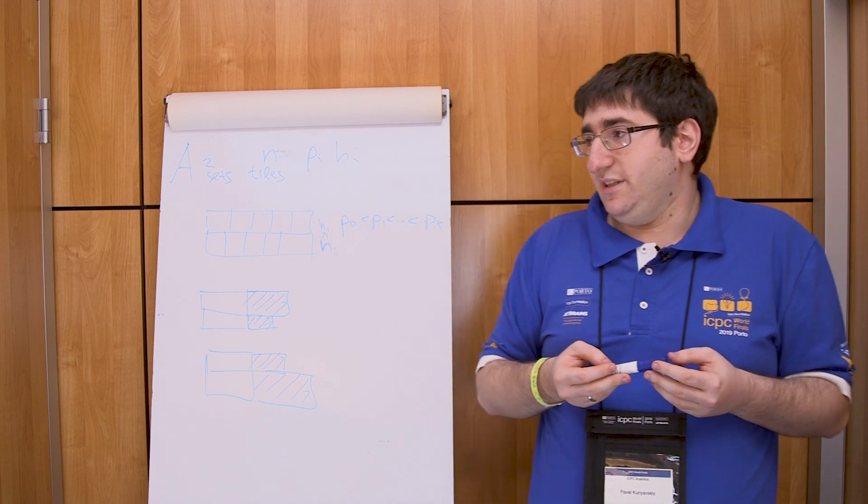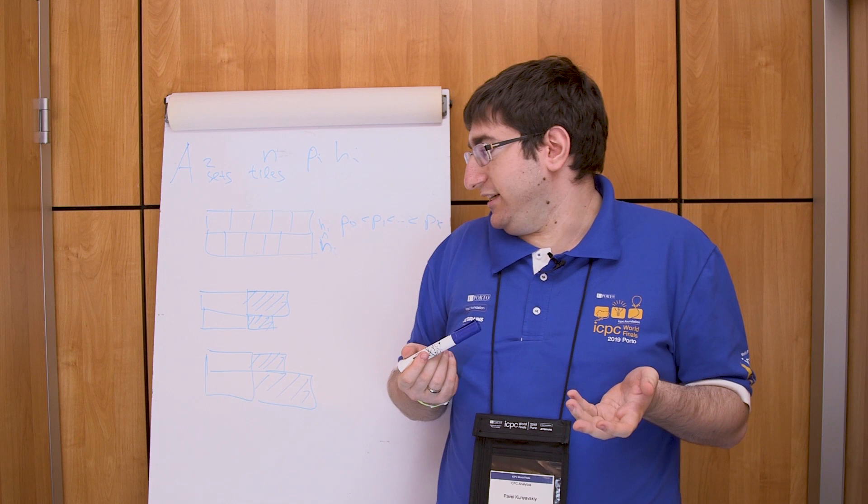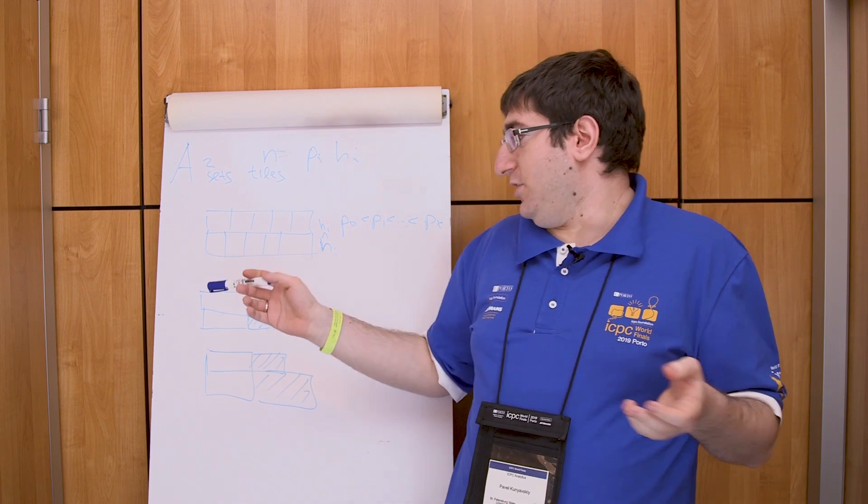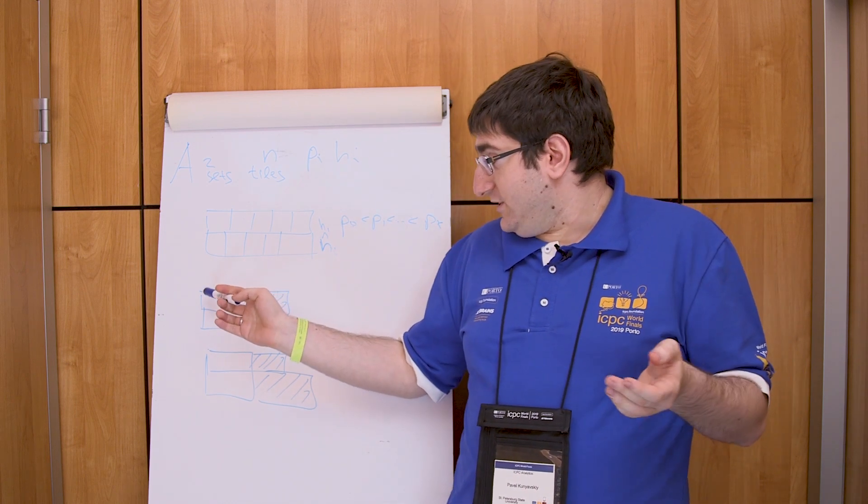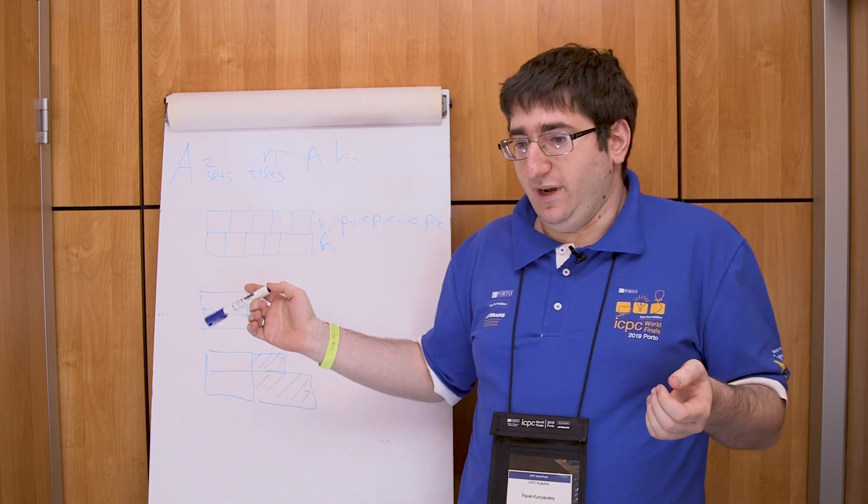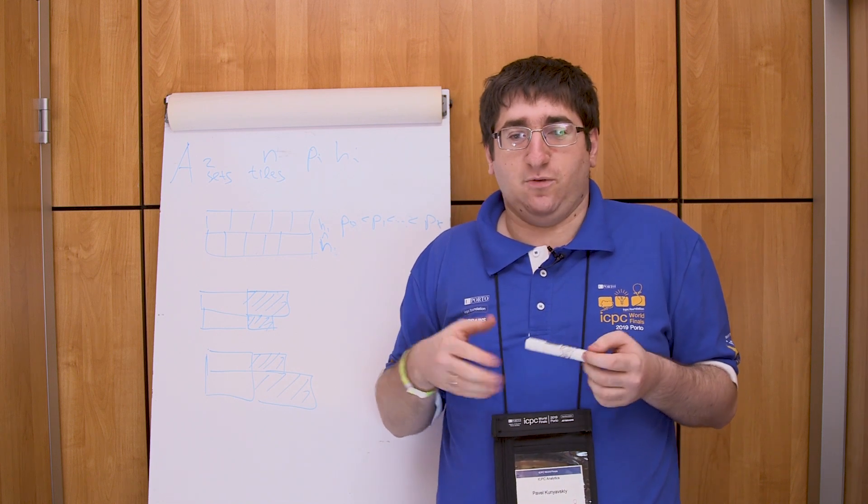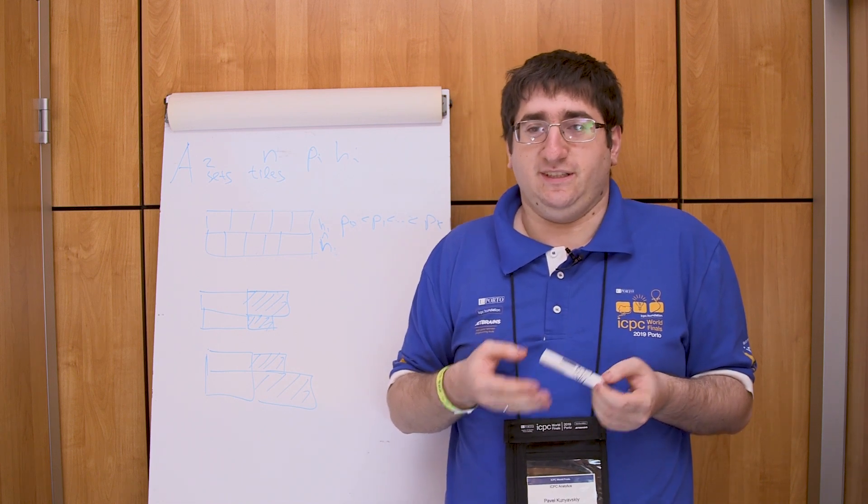So we think this is the second easiest problem in the contest and this can be solved like that. Let's consider several first tiles are fixed in both rows. So we have two cases now.